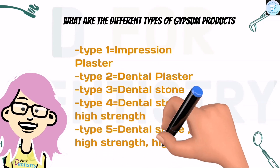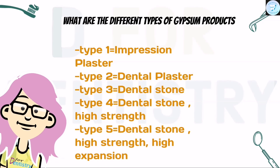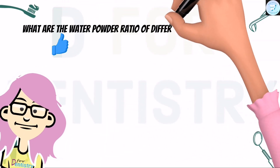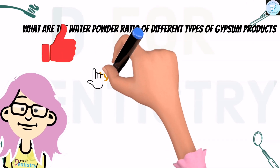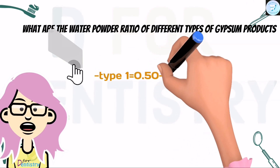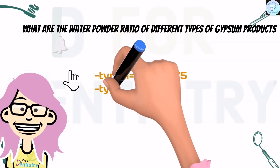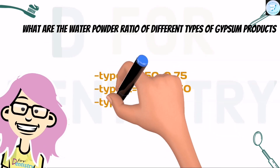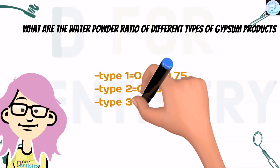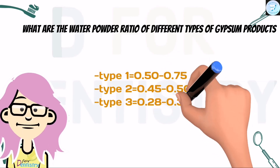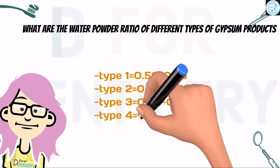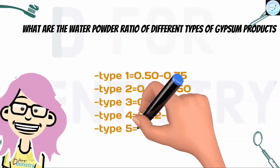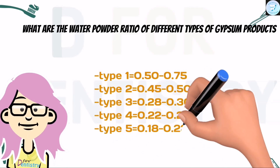What are the water-powder ratios of the different types of gypsum products? For Type 1 it is 0.50–0.75; Type 2 is 0.45–0.50; Type 3 is 0.28–0.30; Type 4 is 0.22–0.24; and for Type 5 it is 0.18–0.22.